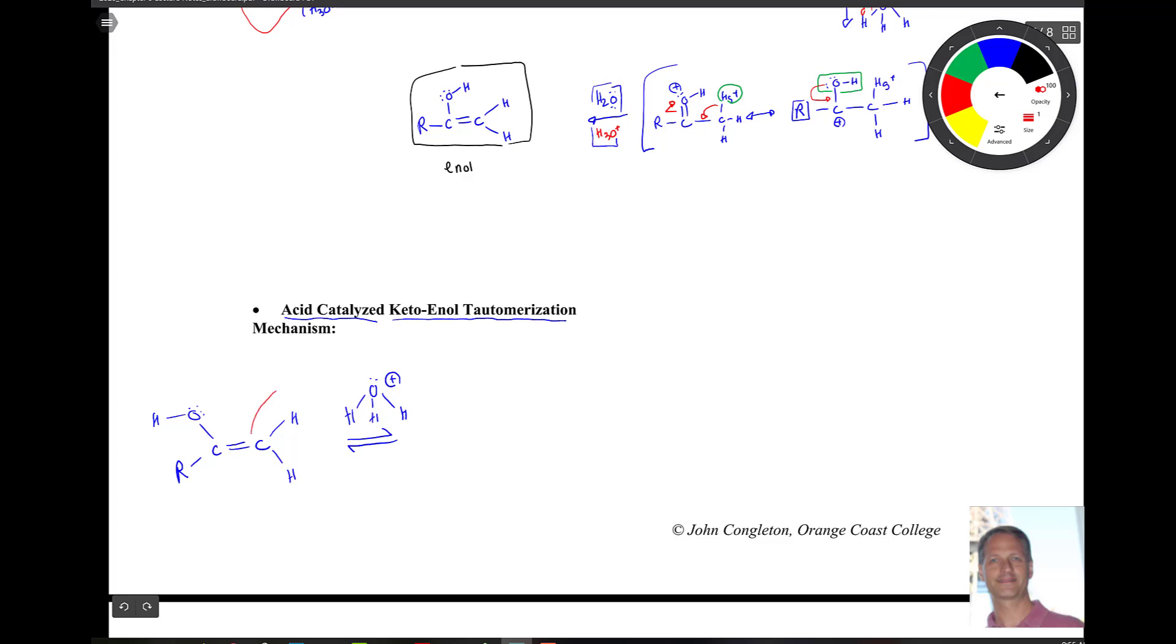So first step, we're going to grab a proton. That proton's going to go the same place where that mercury was. So we're going to get RCOH plus and then one, two, three H's here.